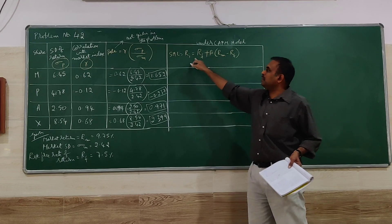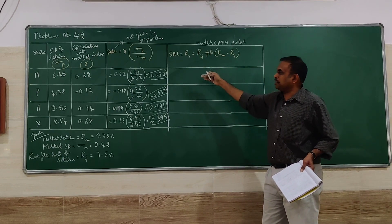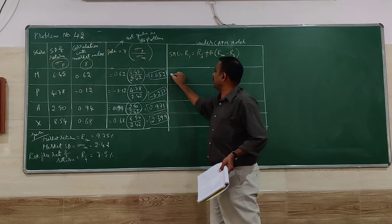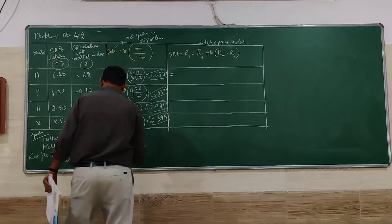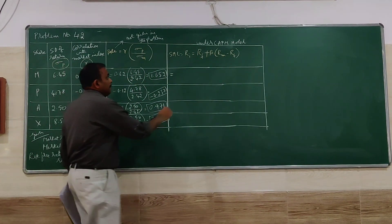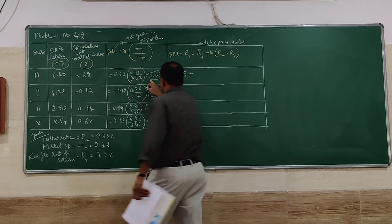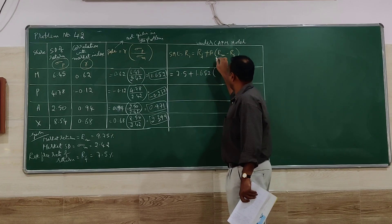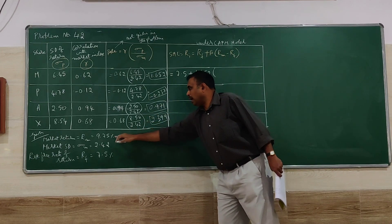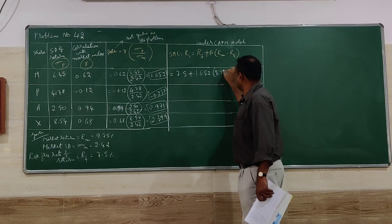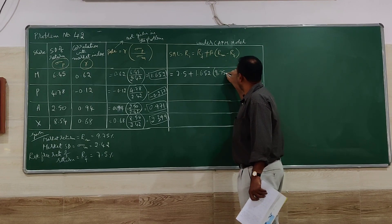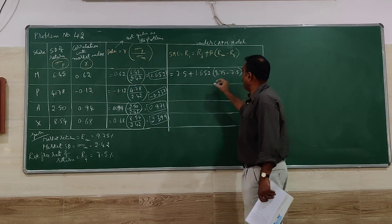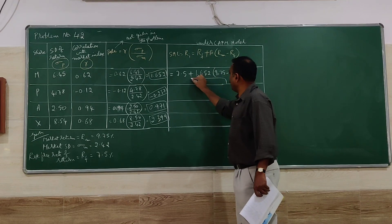With the help of beta, now we can find out the return of every particular share or stock using SML security market line. That is RI. So RF is 7.5 plus beta into RM.